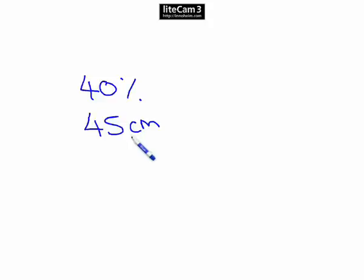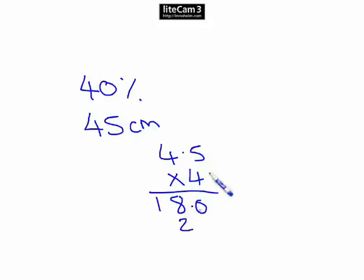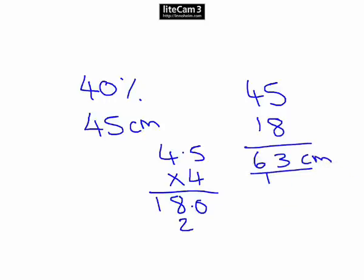OK, so it's 45 centimeters at the moment, 40%. Work out 10%, that's easy: 4.5. Times back by 4 to get 40%: 4 times 5 is 20, 4 times 4 is 16, that's 18. Put back in your decimal point: 18 centimeters is the 40%. So we must add that on now to get the total length. So 45 plus 18 is 63. So our answer is 63 centimeters.